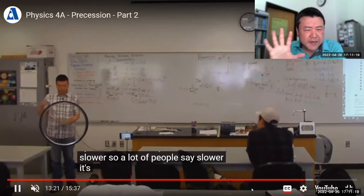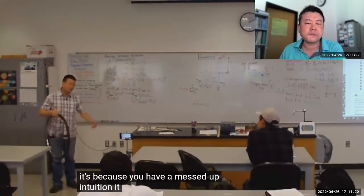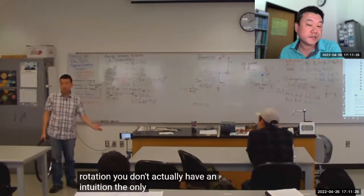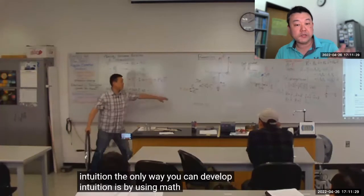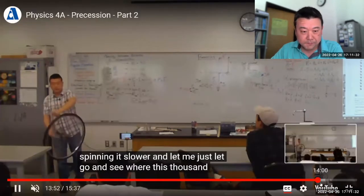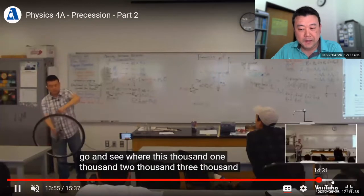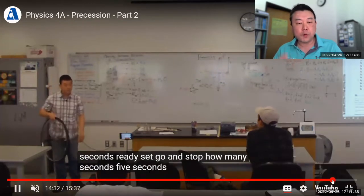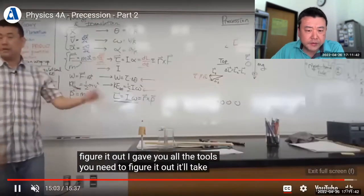I got as far as demonstrating that when the wheel is spinning slowly, it precesses more quickly, kind of at a more descriptive level. But I think this demo is more valuable — you learn more from it with a quantitative estimate. So that's what I would like to do.